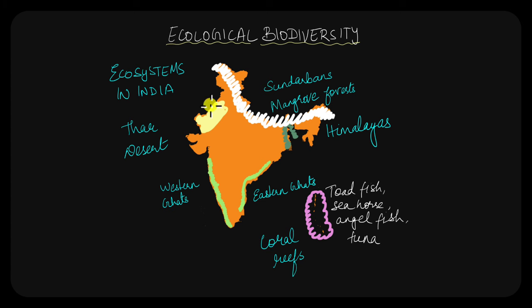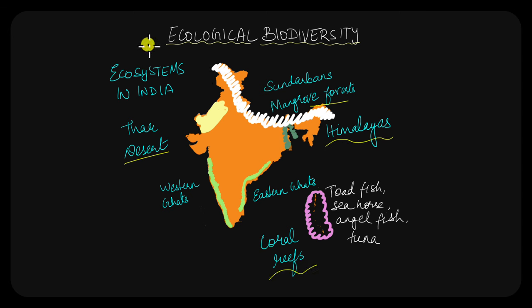See the amount of ecosystems India has — a desert, a rainforest, mangrove forest, a temperate region in the Himalayas, and coral reefs. This shows just how ecologically diverse India is, and how important it is to conserve biodiversity. A lot of threats exist to biodiversity these days, especially from us humans. We will talk more about the threats to biodiversity, why we need to conserve it, and how we can conserve it in future videos.